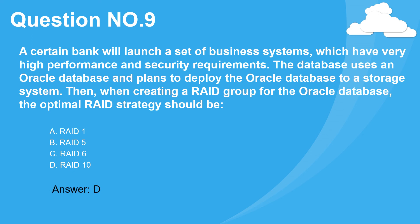Question 9. A certain bank will launch a set of business systems with very high performance and security requirements. The database uses Oracle and plans to deploy it to a storage system. When creating a RAID group for the Oracle database, the optimal RAID strategy should be: A. RAID 1. B. RAID 5. C. RAID 6. D. RAID 10. Answer: D.